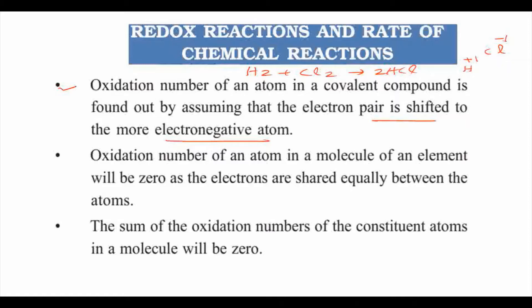In the case of an element, the oxidation number will be zero. For example, H2 and Cl2 — if we look at oxidation number, oxidation number is zero. Hydrogen has two atoms with equal sharing of electrons. This is the same case with Cl2 — equal electron sharing. So the oxidation number of an atom in the molecule of an element will be zero, as the electrons are shared equally between the atoms.